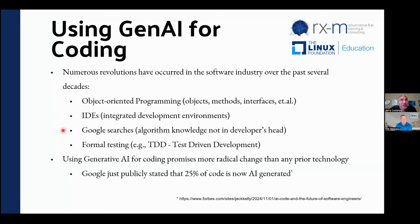A big shift that often gets overlooked is Google Search. When I first started, we would interview people based on their knowledge of algorithms — it was perfectly acceptable to ask a candidate the difference between a quicksort and a bubble sort. We tested algorithmic knowledge. Well, that changed once Google searches became prolific. Today you just type it into Google and you can see — and copy and paste — the code.